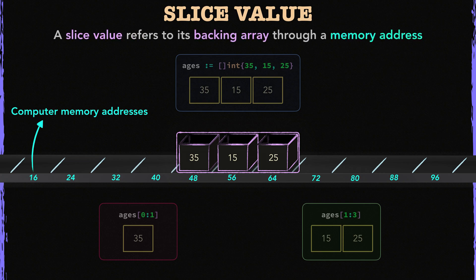So a slice needs to store that memory address, right? To do that, behind the scenes, Go implements the slice as a small data structure called the slice header, and in that data structure, it stores the memory address of a slice's backing array.